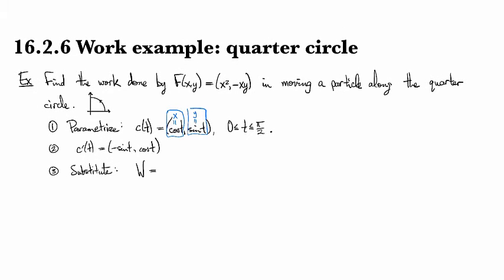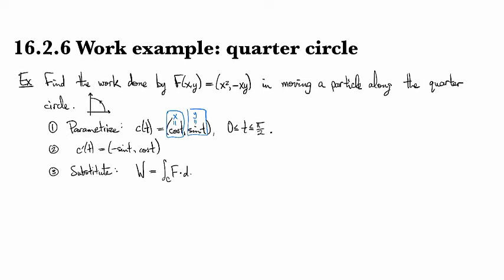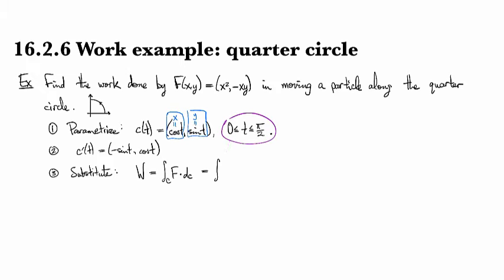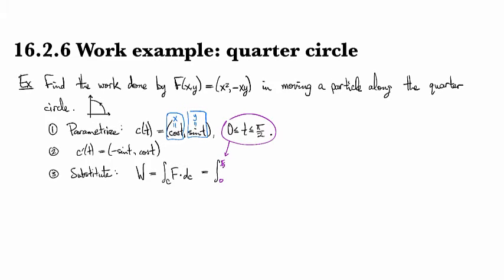So the work starts off as looking like the integral over c of f dot d little c. And then in terms of the parameter domain, we've got this right here telling me that we're going from 0 to pi over 2.